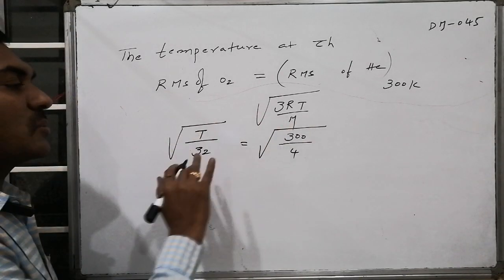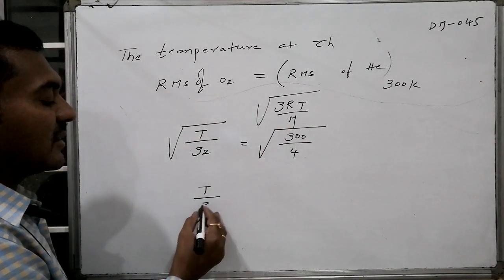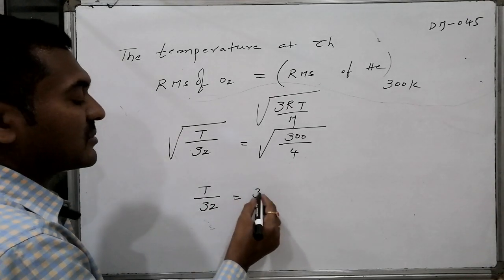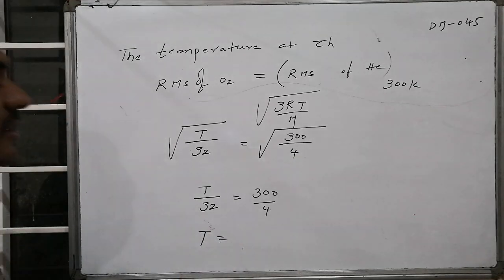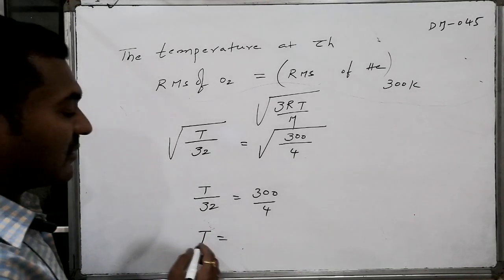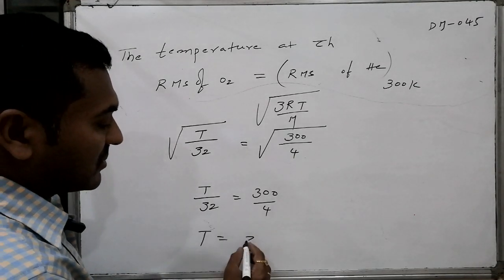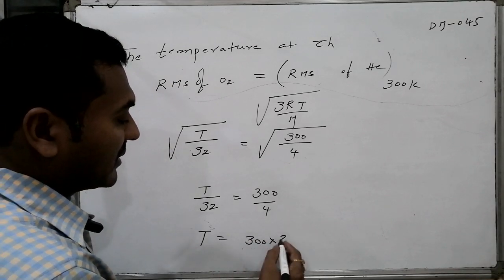And canceling the root on both sides, that is T by 32 will become equal to 300 by 4. So therefore the temperature where it becomes equal as T is equal to 300 into 32.